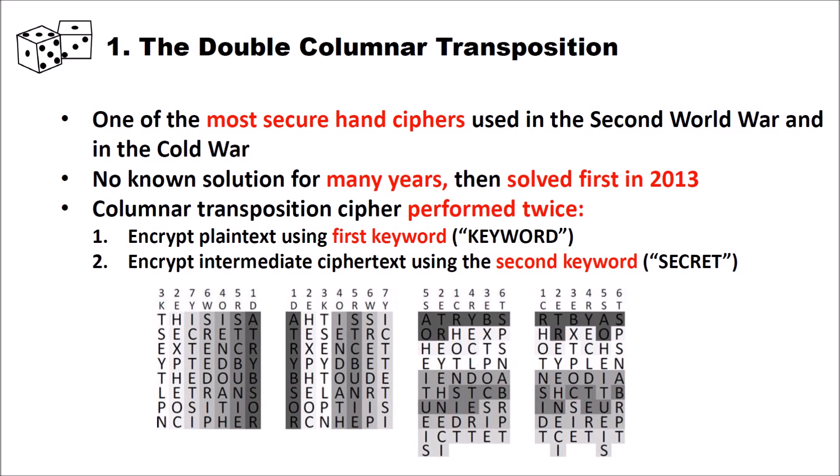The challenge was first solved in 2013 by George Lasry. The double columnar transposition cipher itself is a columnar transposition cipher that is performed twice — you encrypt the text using the first keyword and then encrypt the intermediate ciphertext using the second keyword. If you are interested in the single columnar transposition cipher, I suggest you have a look at my previous video on that topic.